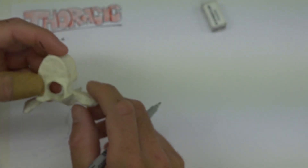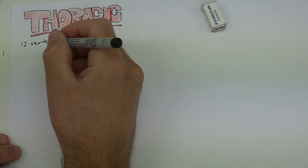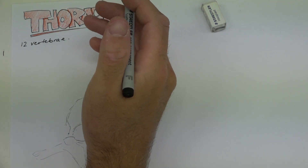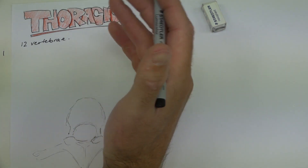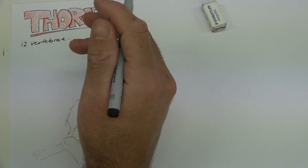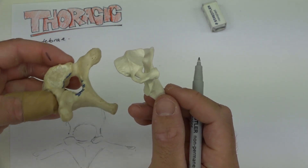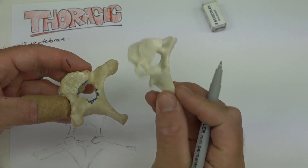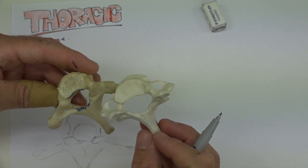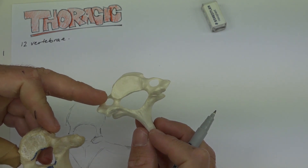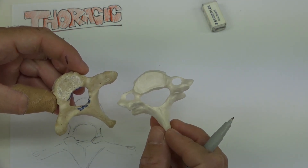Now, talking about typical and atypical vertebrae — the thoracic region is quite interesting. Some books describe T1 to T4 and T9 to T12 as atypical. When we look at C7 transitioning to T1, we've gone from the cervical region to the thoracic region. The major difference is that cervical vertebrae have transverse foramina, and T1 does not.